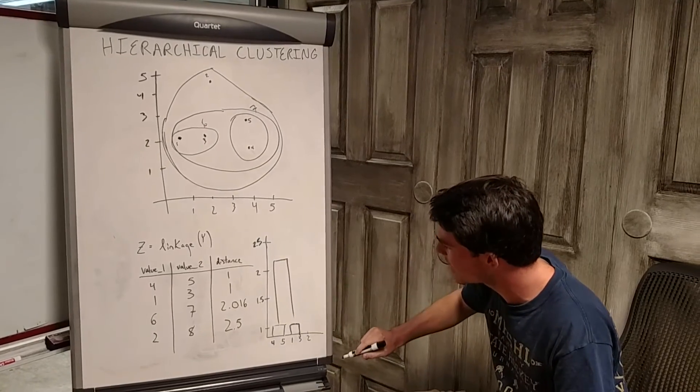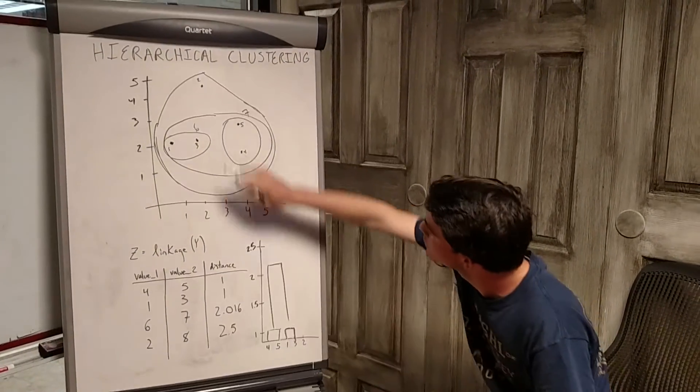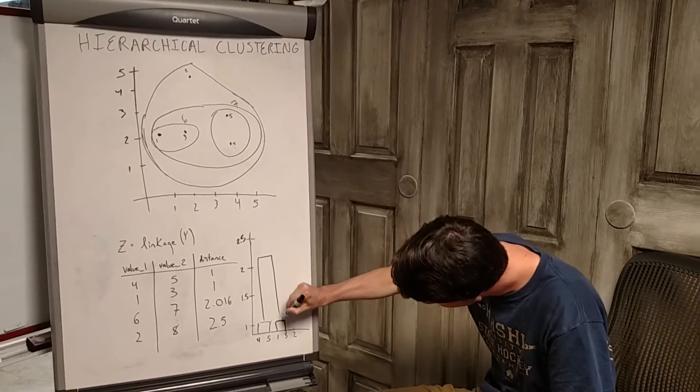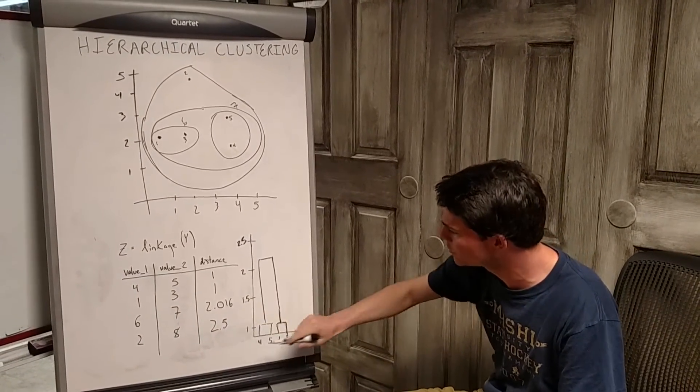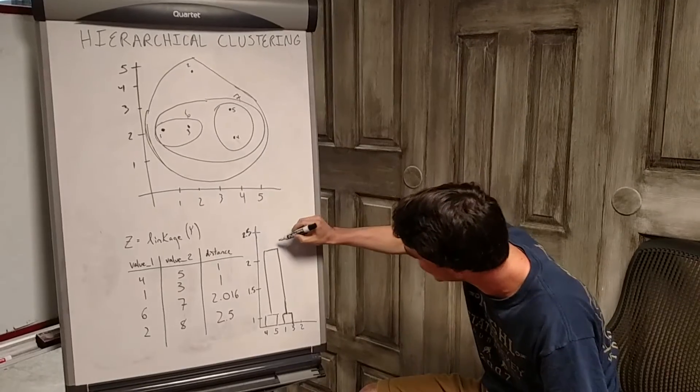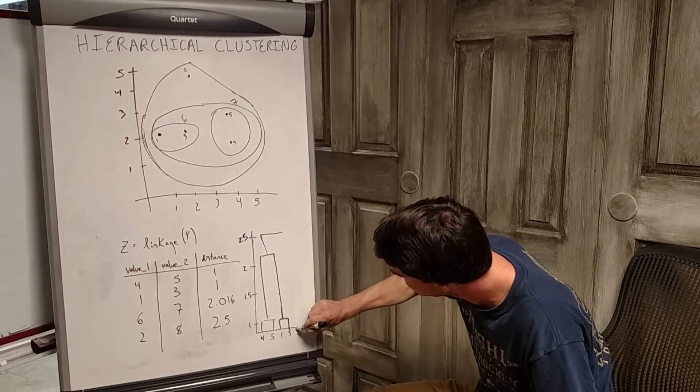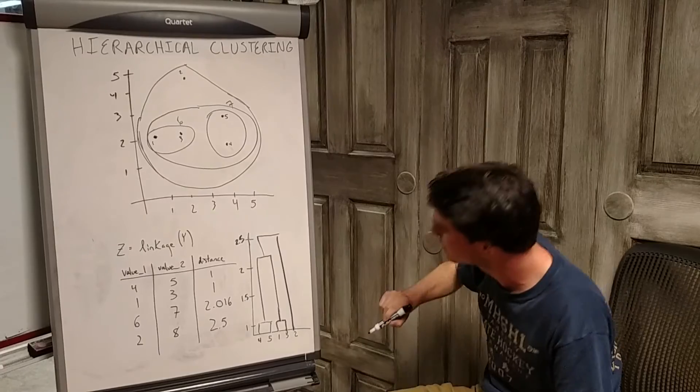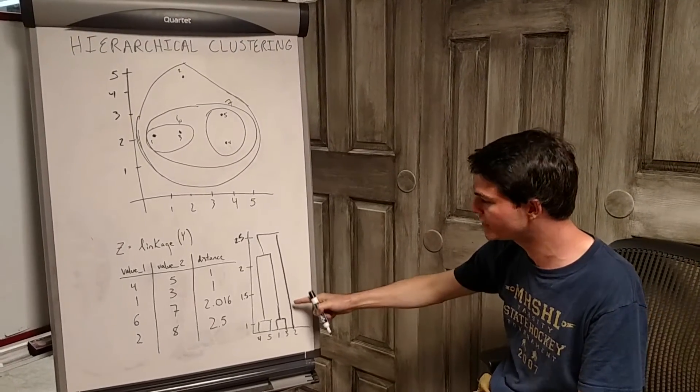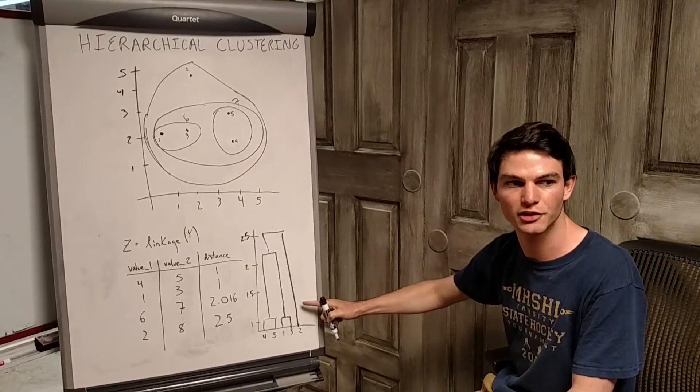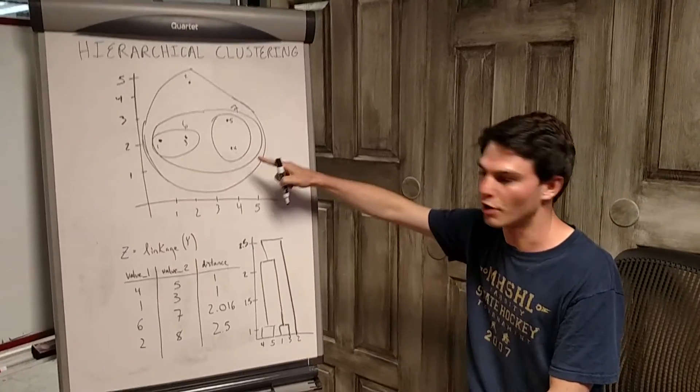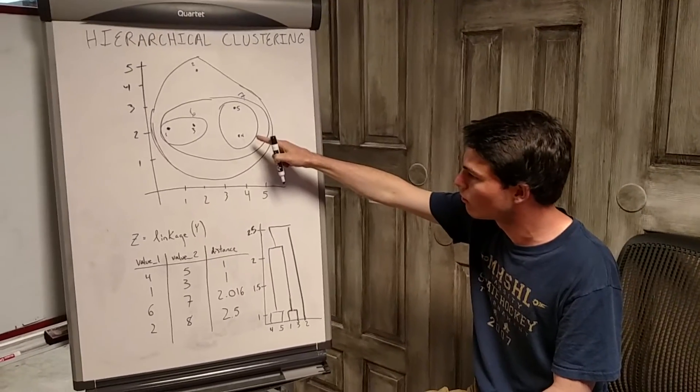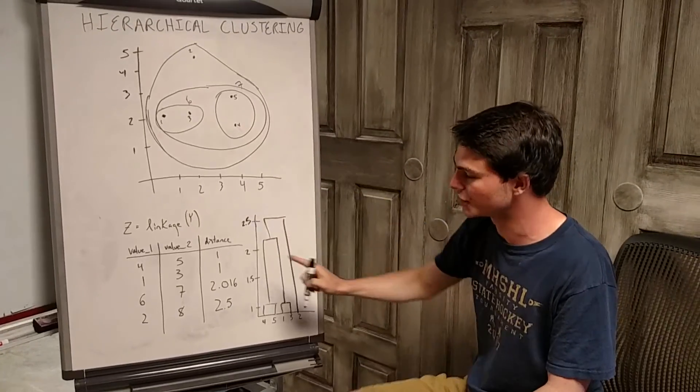And lastly, this point two is the distance 2.5 away from that cluster. And now we see a production of our dendrogram based on these clusters, where these clusters were identified via linkages.